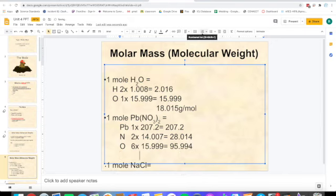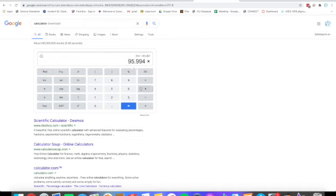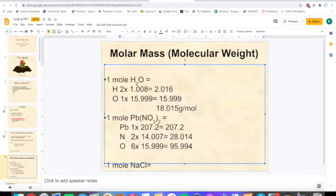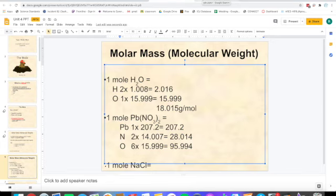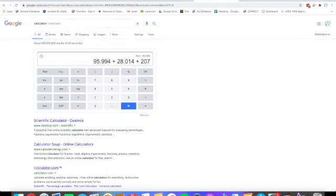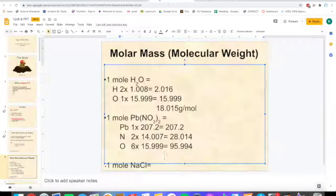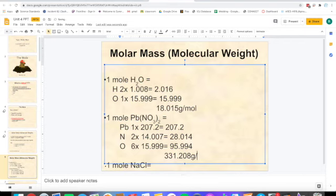Now that we have all three of these numbers, we add them up. So 95.994 plus 28.014 plus 207.2 equals 331.208. So 331.208 grams per mole.